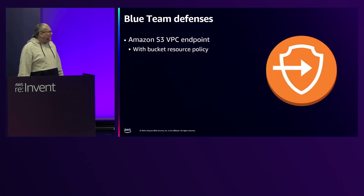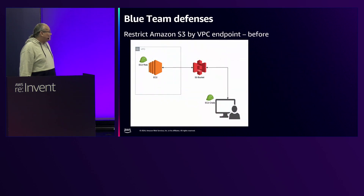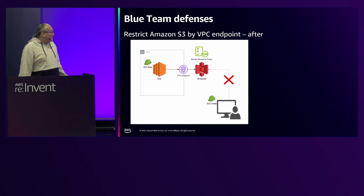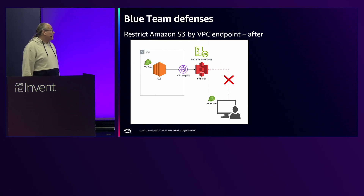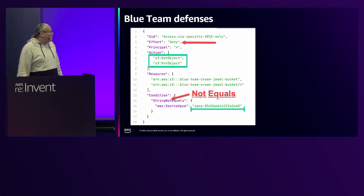Another defense is using a VPC endpoint for S3 combined with an S3 bucket resource policy. In our scenario, the attacker used EC2 credentials remotely because they were exported. However, with a VPC endpoint and bucket resource policy, even if you have the credentials you wouldn't be able to get the file from S3. The policy is a deny on GetObject if the VPC endpoint ID is not the one you specify.